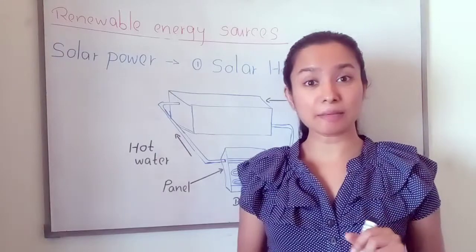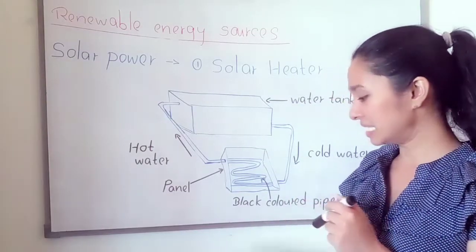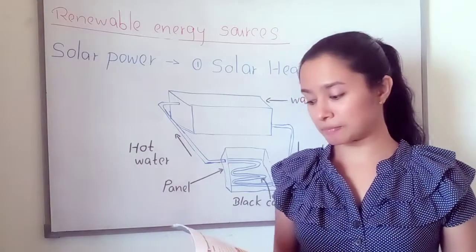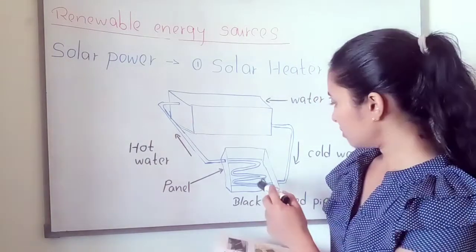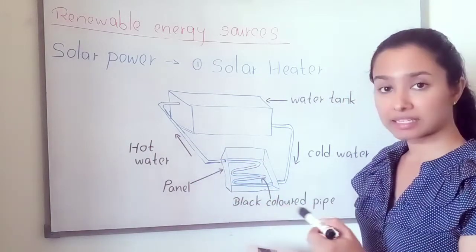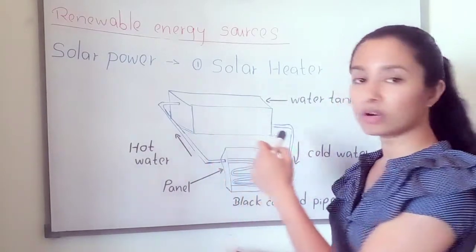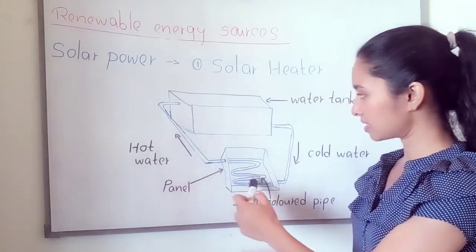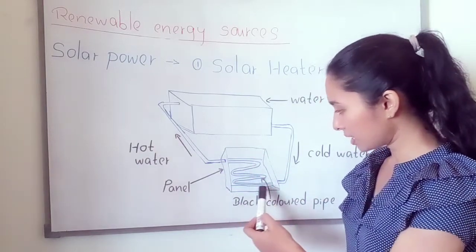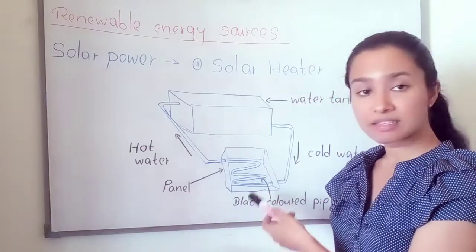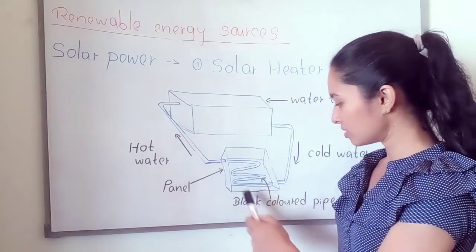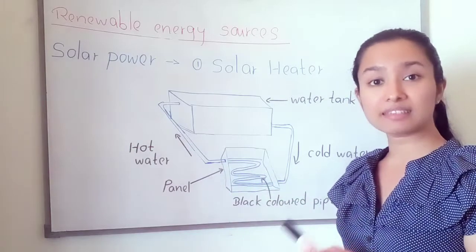We can make a simple solar water heater — that is Activity 19.2. Look at your book. We need a black-colored pipe connected to a water tank, and the pipe is placed on a black-colored surface to form a solar panel. Both the pipe and the surface are black in color.